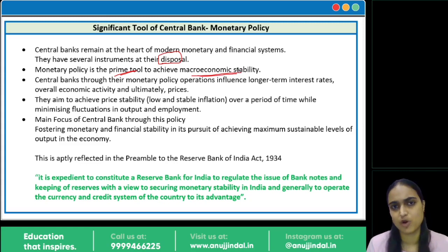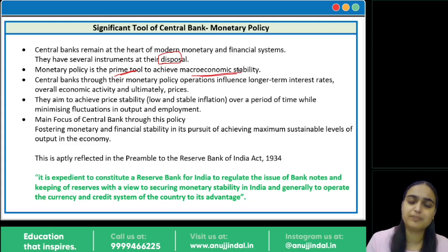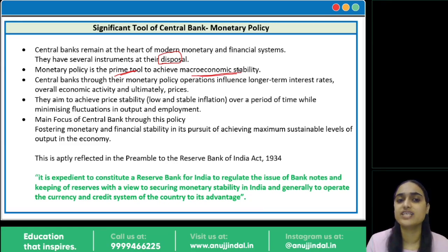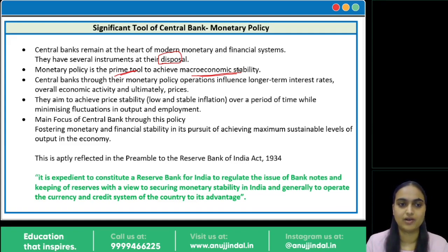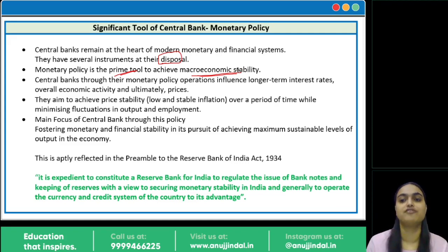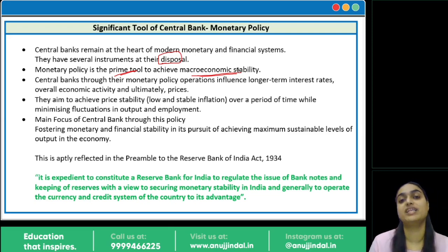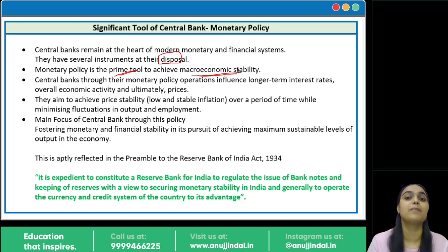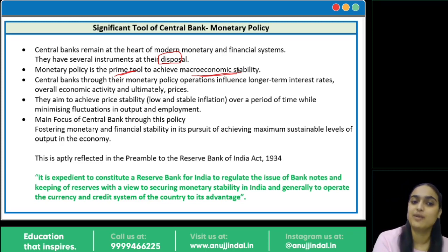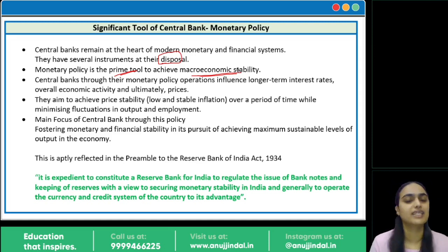We have covered many sessions on monetary policy. In the monetary policy statement, things like repo rates, reverse repo, SLR, CRR — all these tools are used by RBI to deal with money supply in the economy. Through these policy operations, RBI tries to affect interest rates, which further determine overall economic activity and prices. How much money comes into the economy determines production, output, employment, and inflation.